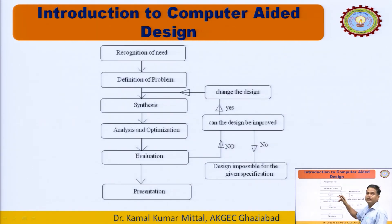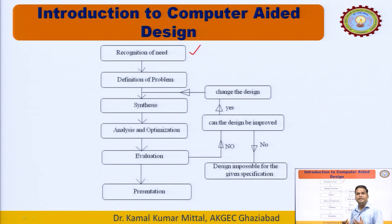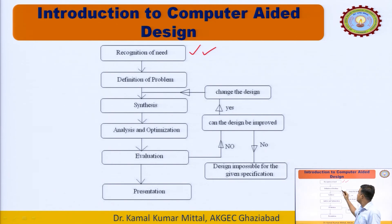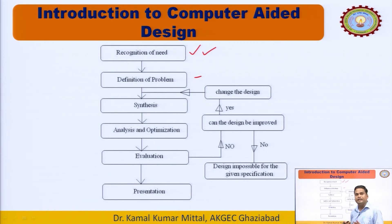This is the flowchart of computer-aided design. First is recognition of need — identifying what is required, which could arise from a change needed in a product, a survey, or feedback given by the customer. Then comes definition of problem — once we know the need, we define the problem. For example, before the 70s and 80s, there was no automation; the need for automation arose through revolutions.